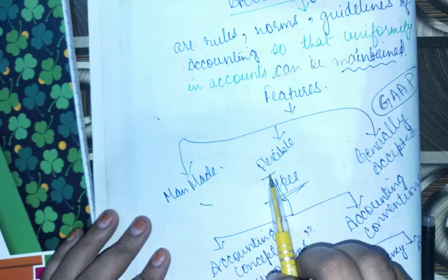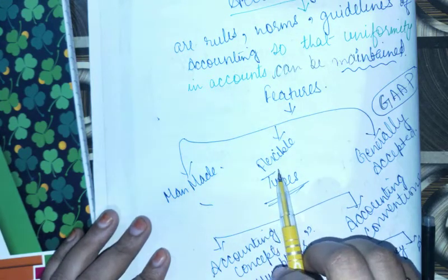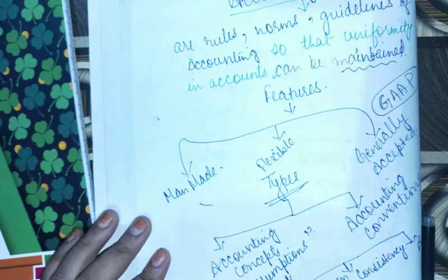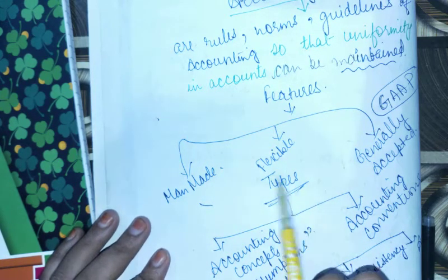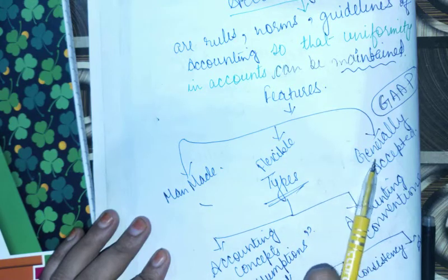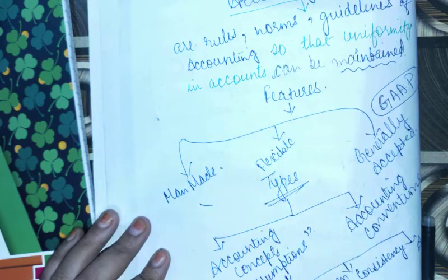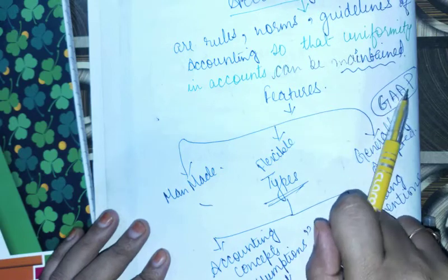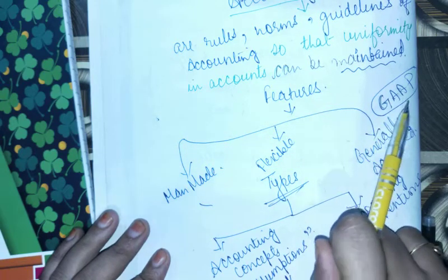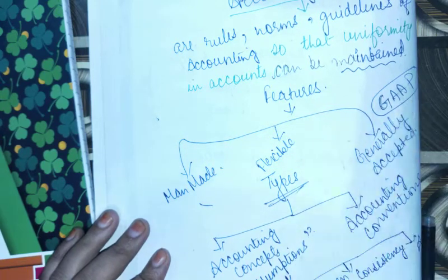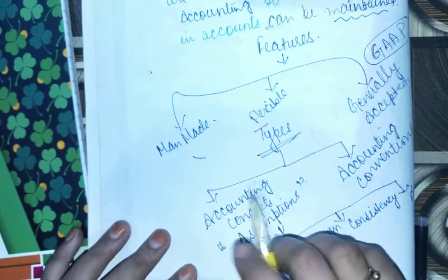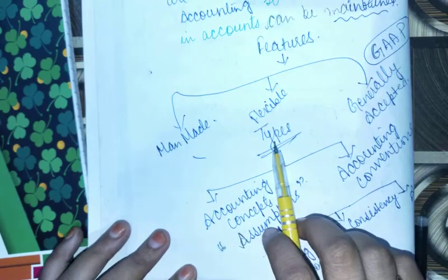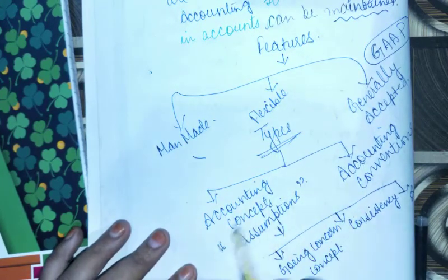Second, it is flexible. If there are changes, we can easily make changes. Third, it is generally accepted. That is why this is called GAAP — Generally Accepted Accounting Principles. It is divided into two types: accounting concepts and accounting conventions.